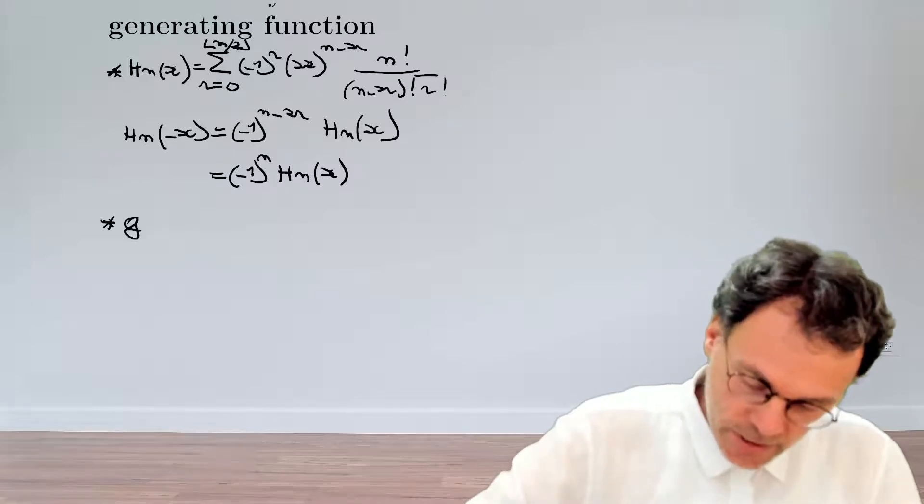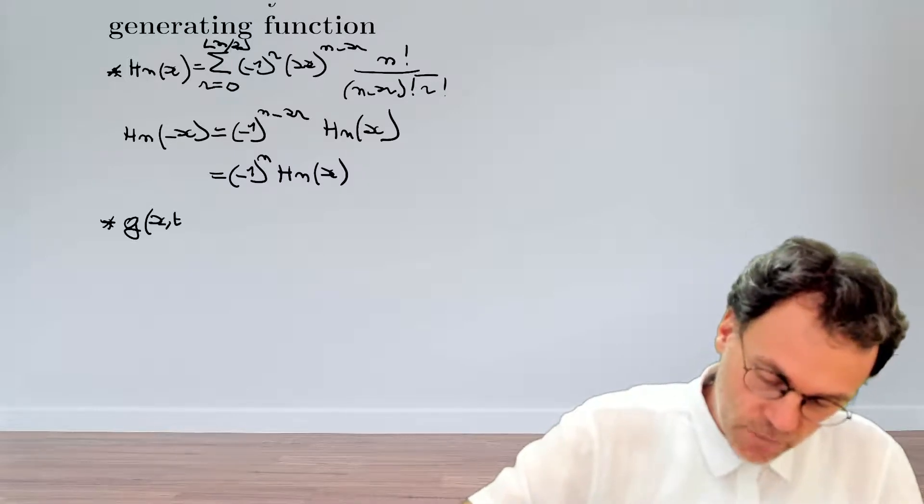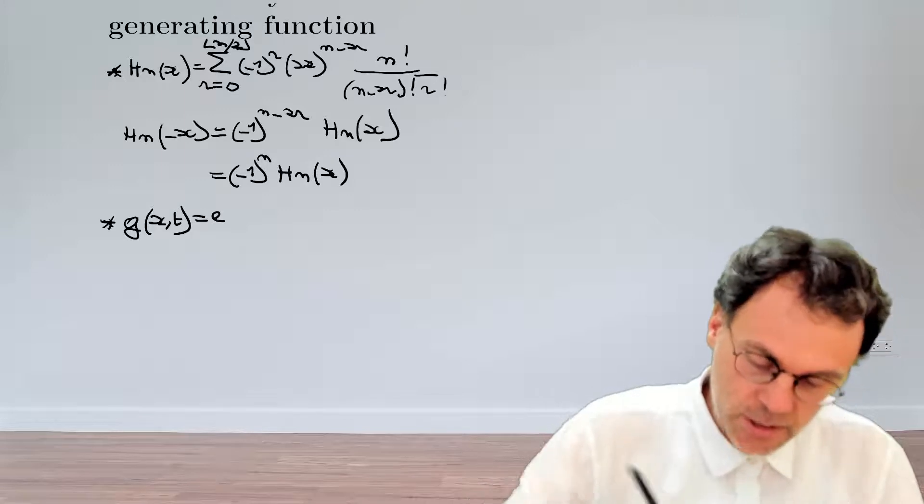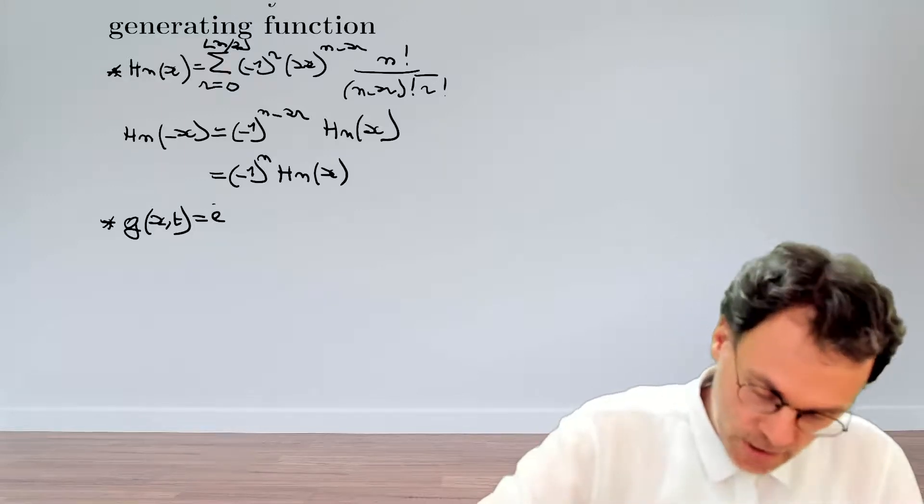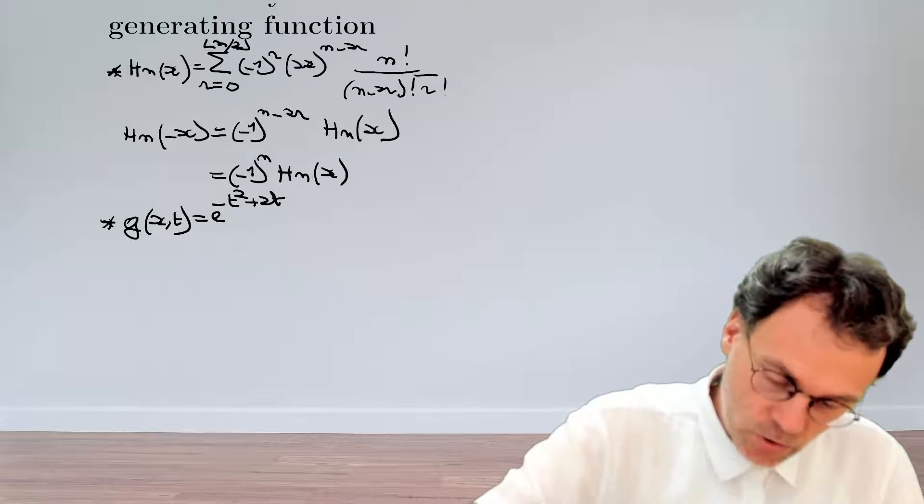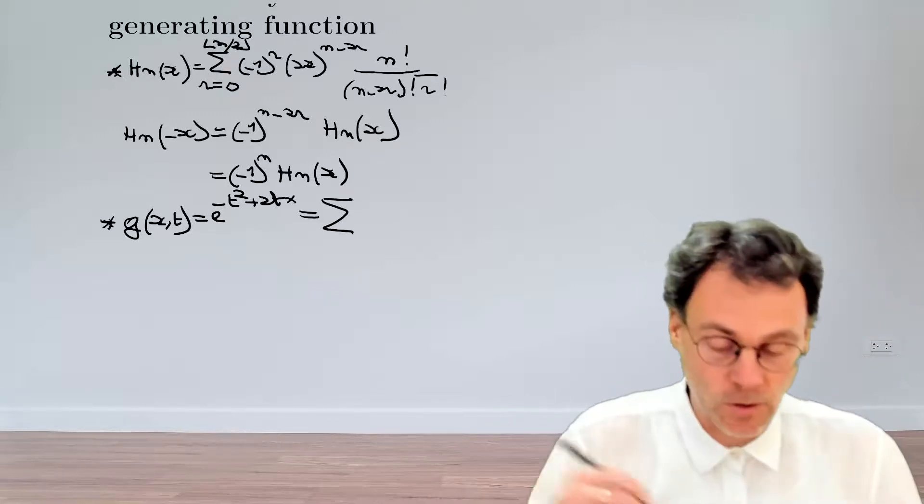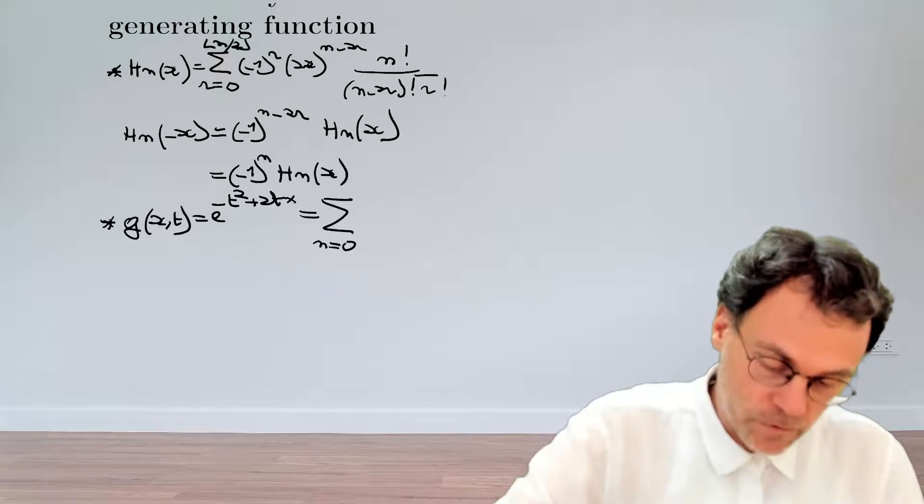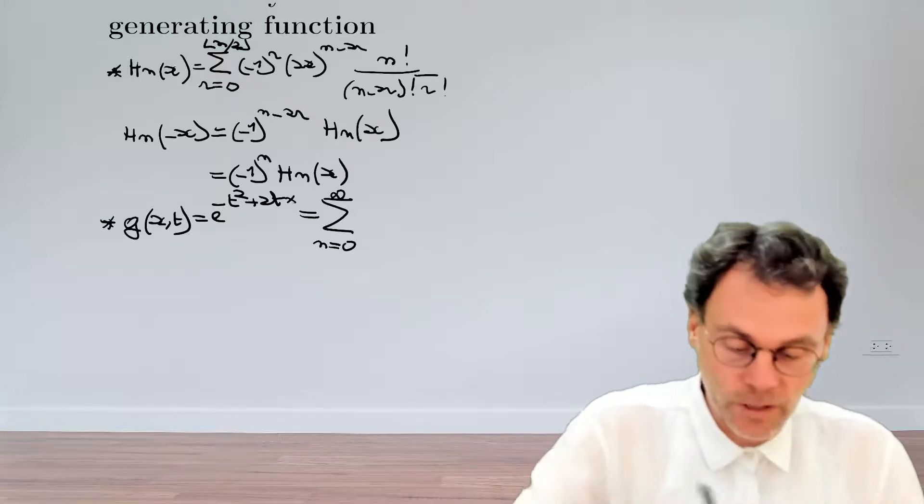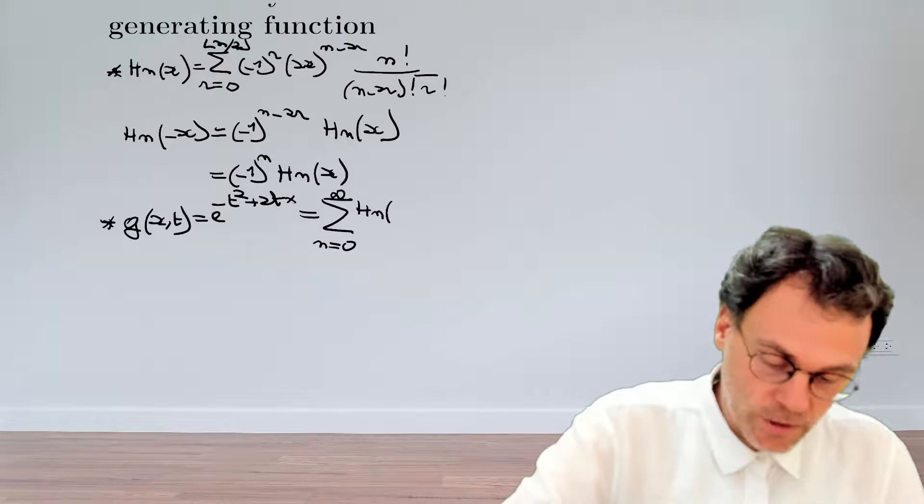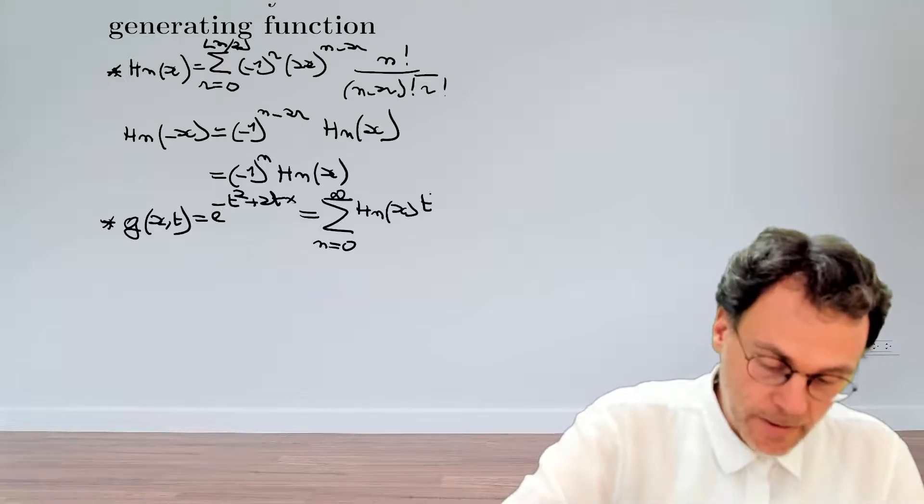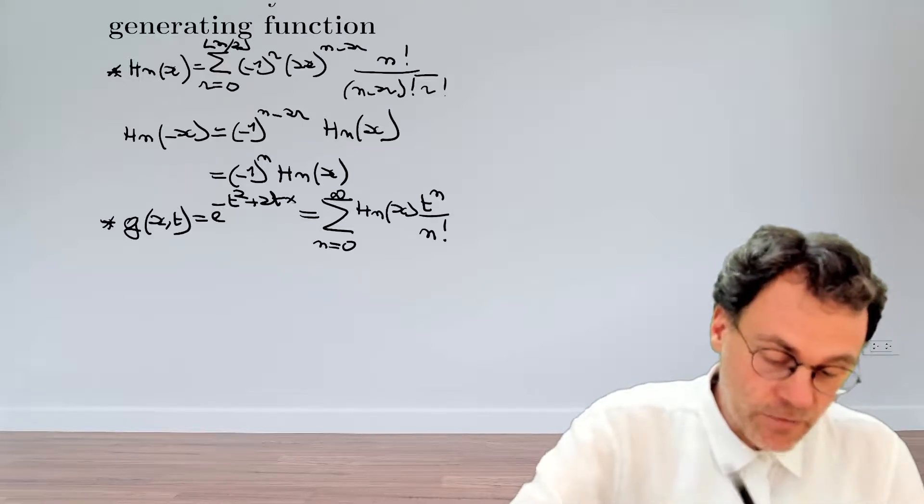So the generating function for x and t is defined as exponential minus t squared plus 2tx. And that way, if we expand this as a Laurent series summation from n equals 0 to infinity, we have that this is the Hermite polynomial of order n, t to the power of n divided by n factorial.